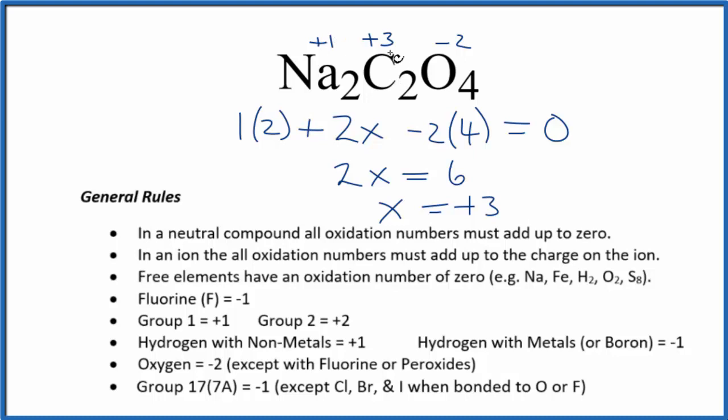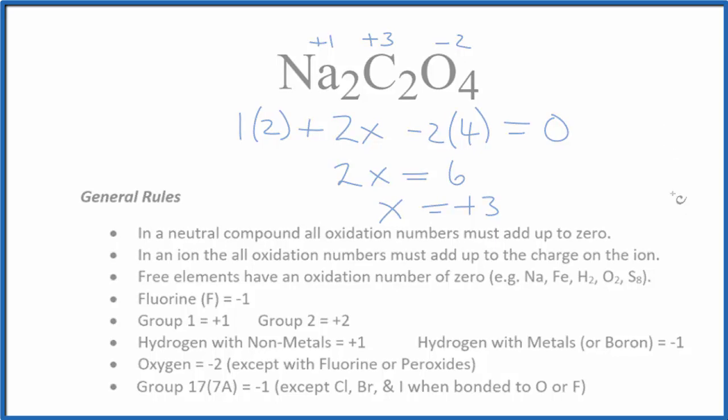If you multiplied and then added all of these numbers up, that would equal zero. This is Dr. B with the oxidation number for each of the elements here in Na2C2O4. Thanks for watching.